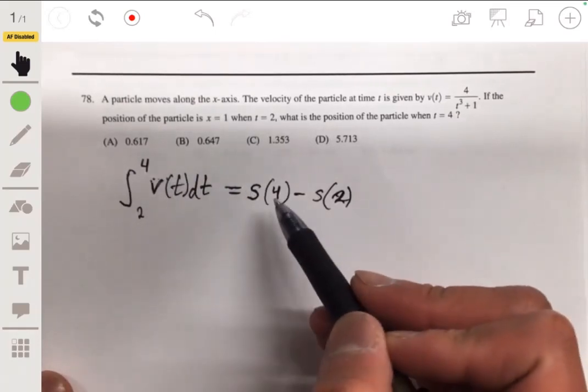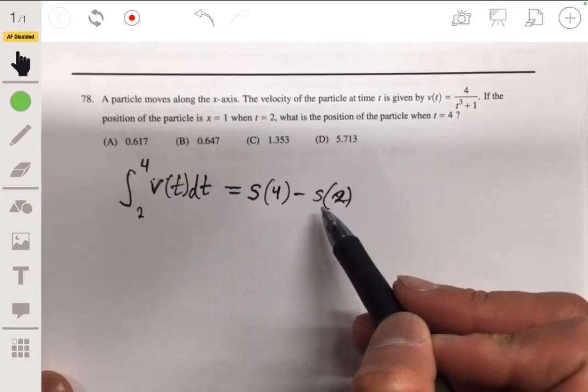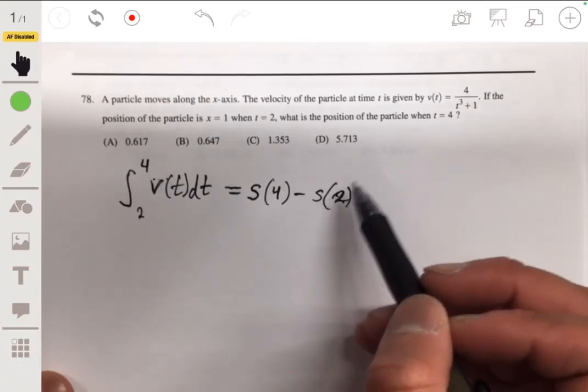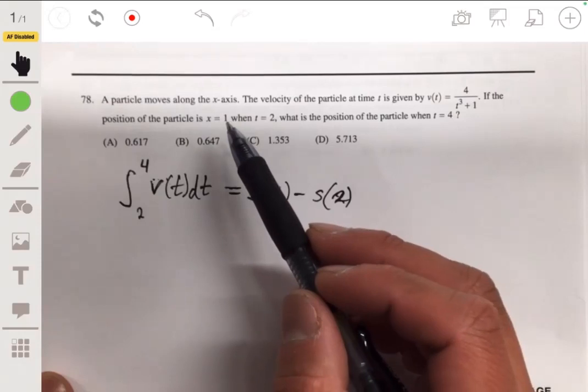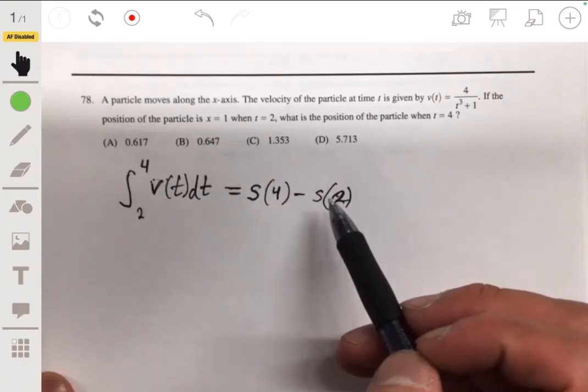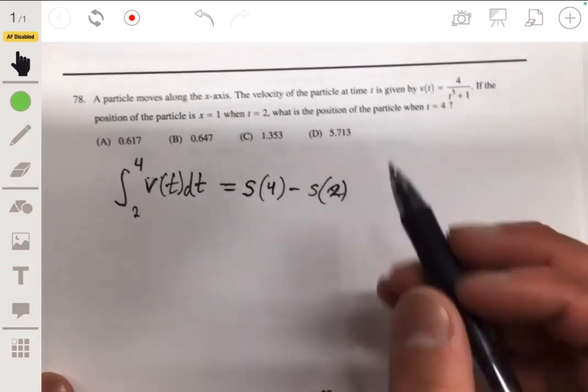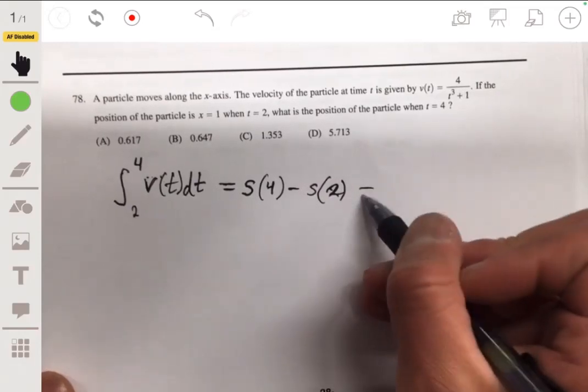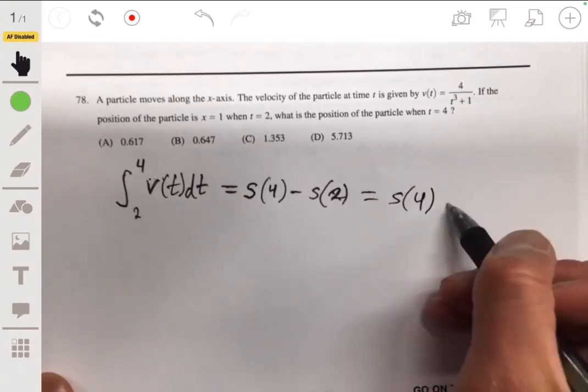So when we're going to integrate this in our calculator, we're going to get some number. Then that number is going to be equal to s of four minus s of two. And we're given that the position at two seconds, s of two, is one. So this is equal to s of four minus one.